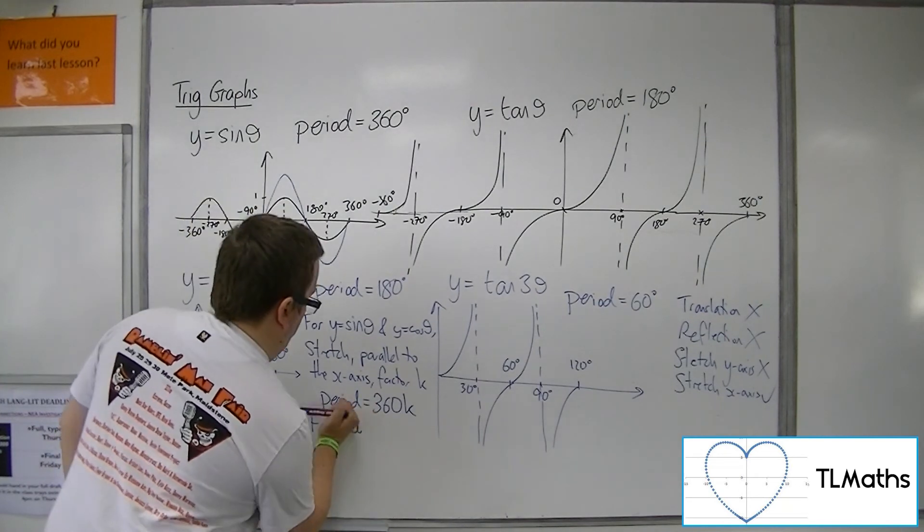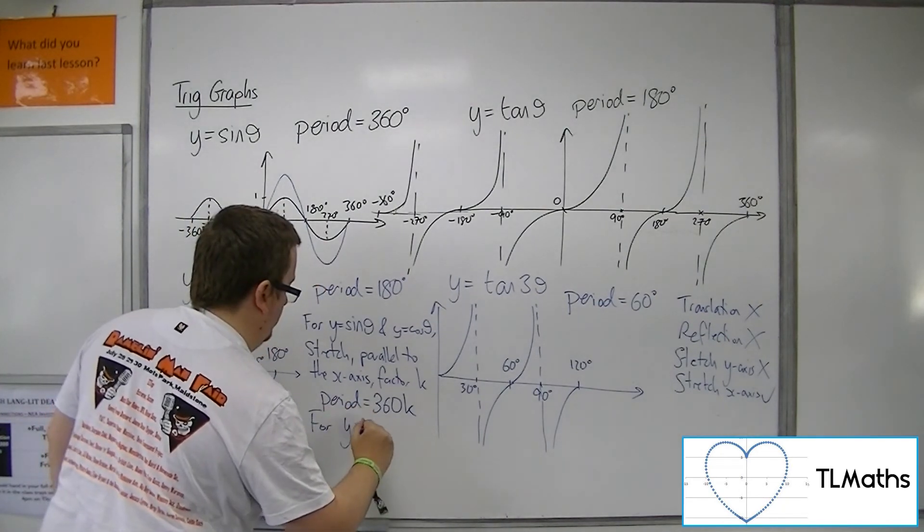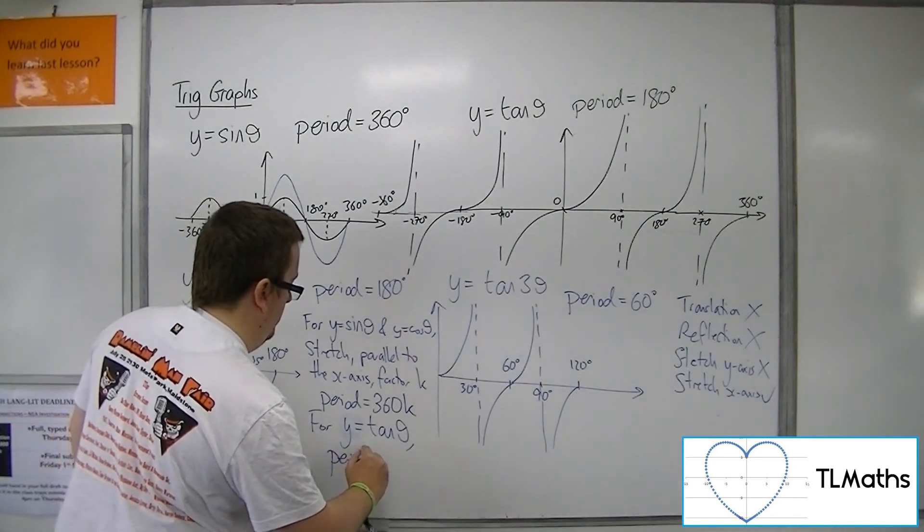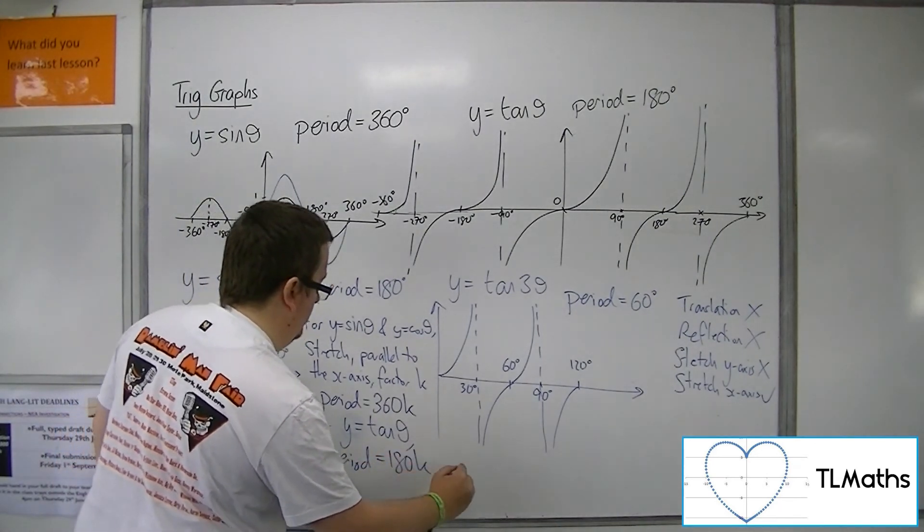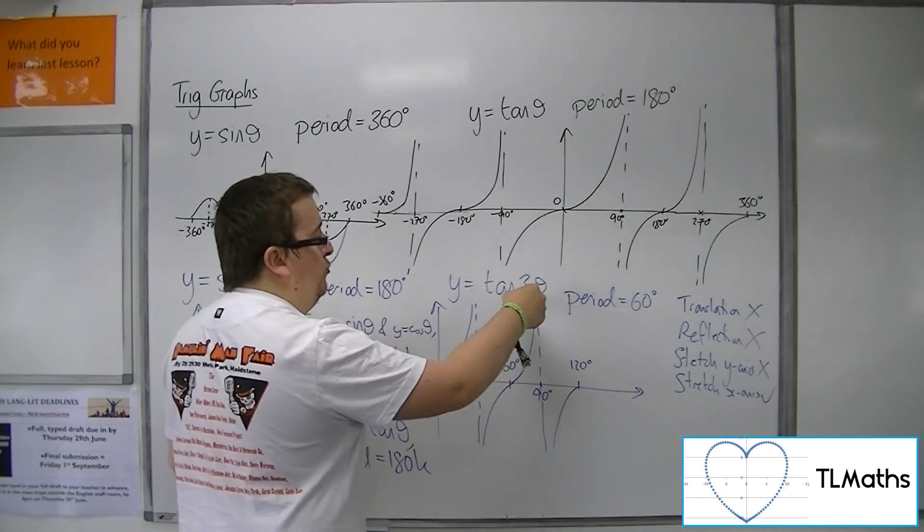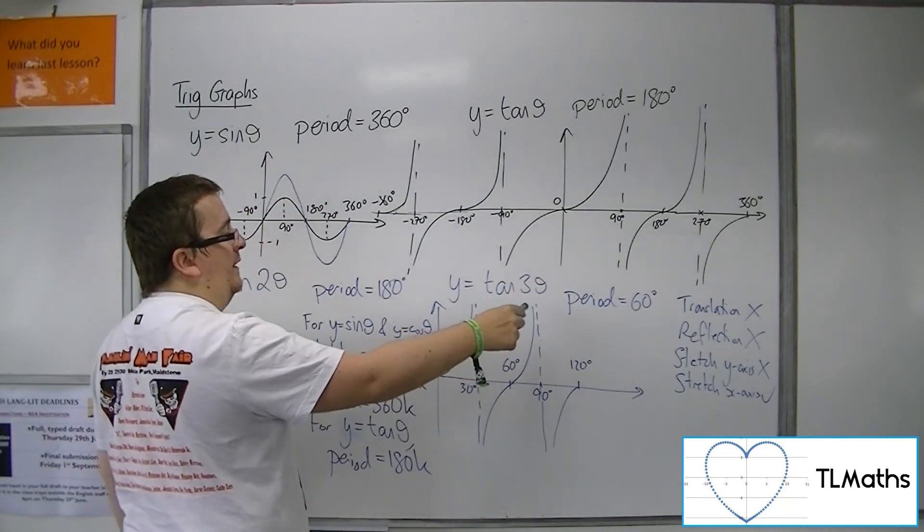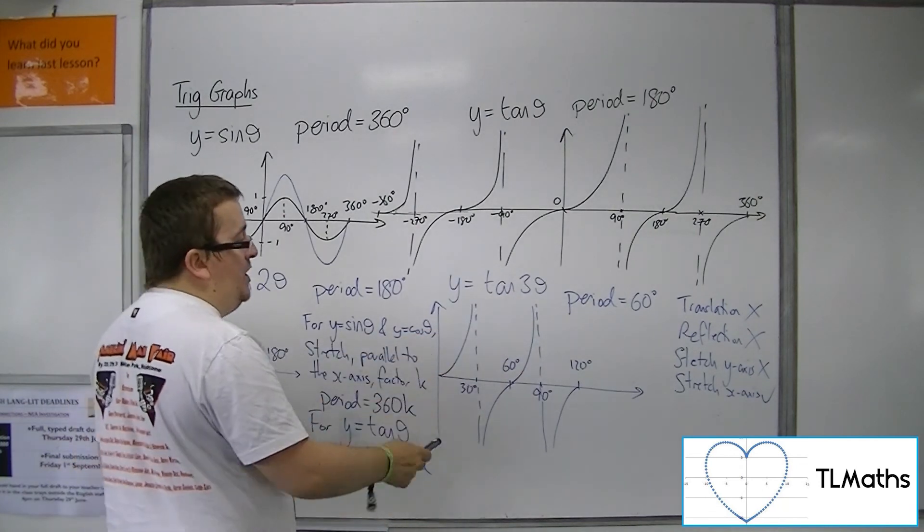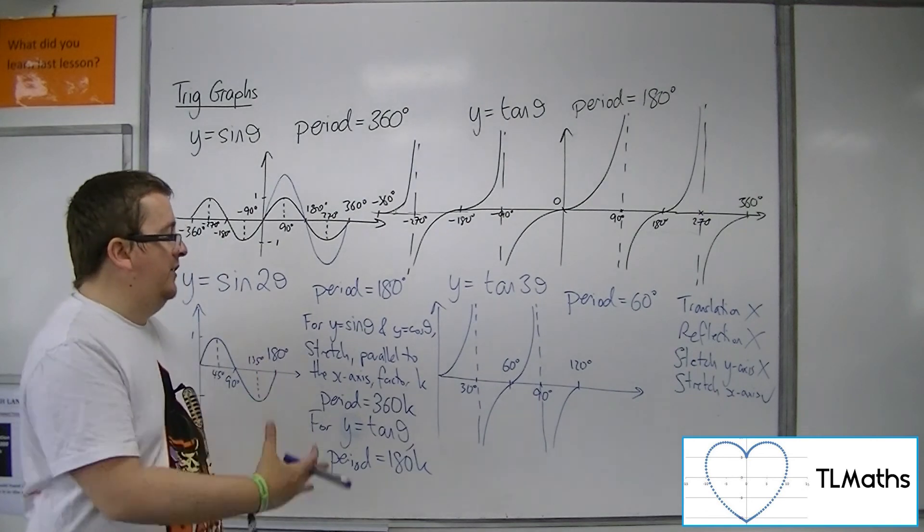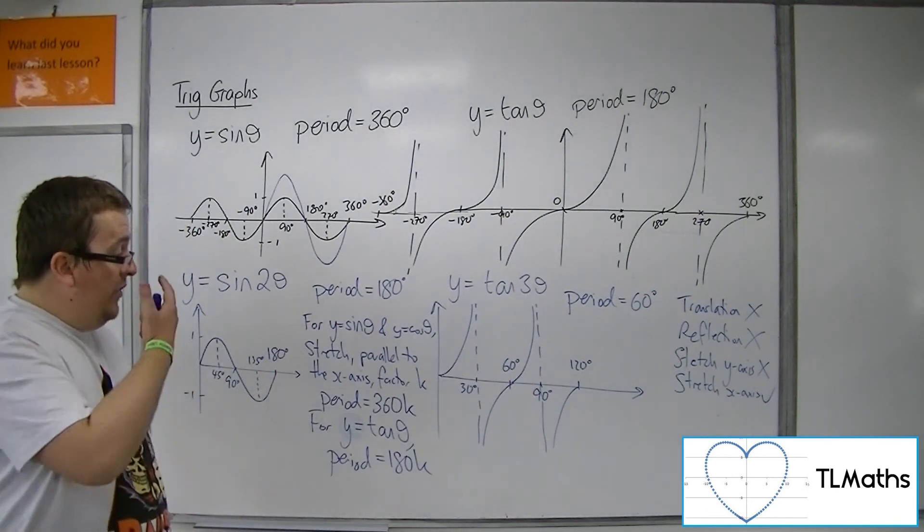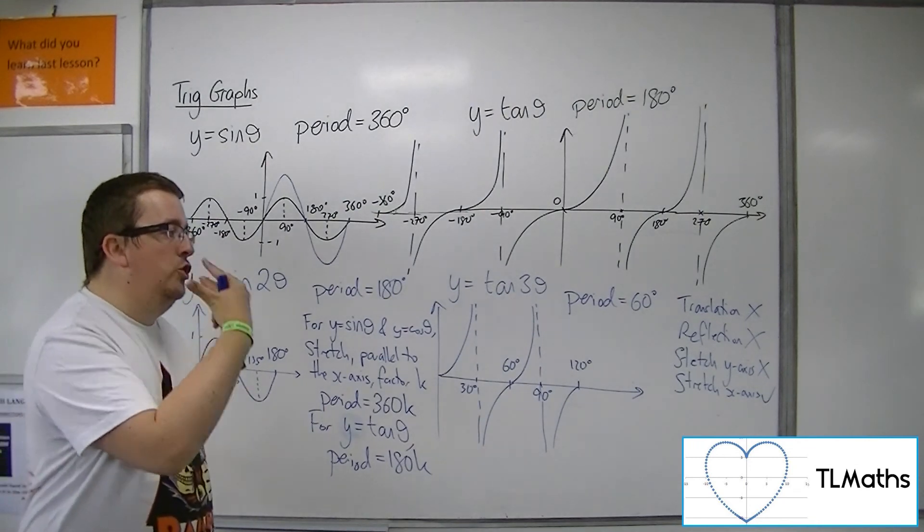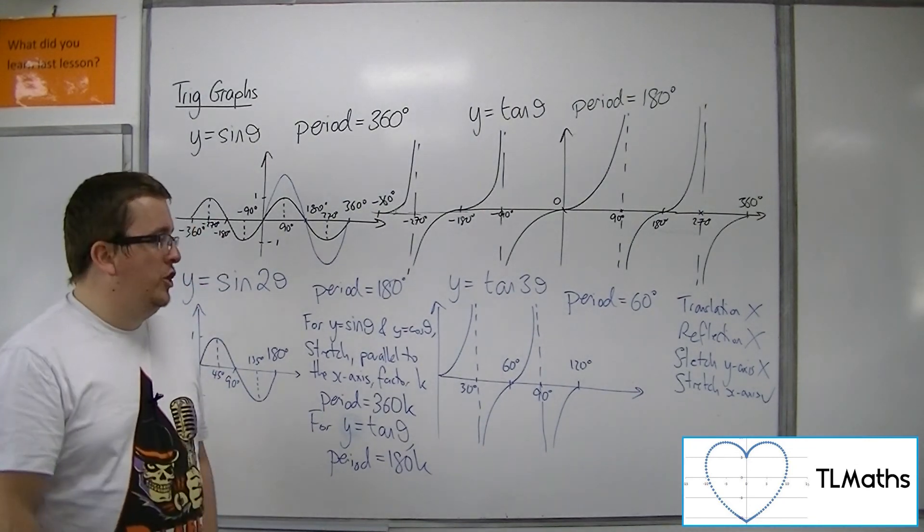For tan, for y equals tan theta, then the new period would be 180 times k. So here we had a stretch parallel to the x-axis factor 1 third. The new period is 180 times 1 third, which is 60 degrees. So that is how the period can change given a transformation, and it's only going to change when you've got a stretch parallel to the x-axis.